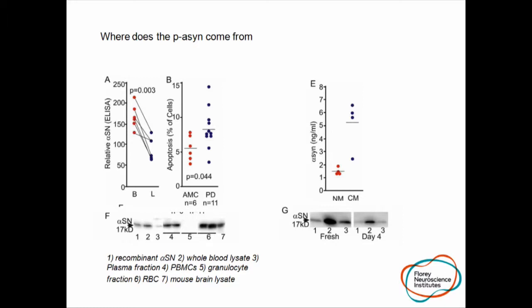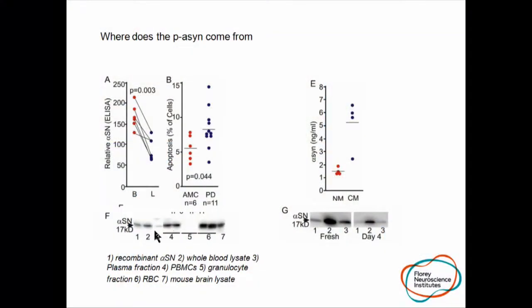The second thing we looked at was to take B cells from a small number of healthy controls and Parkinson's subjects and transform them. At this stage it wasn't because we particularly thought lymphocytes would be the guilty party, but we knew the technology, and we looked at the rate of apoptosis and found it was higher in B cells removed from Parkinsonian subjects. Alpha-synuclein is mainly in the PBMC fraction, not in the granulocytes, but also in the red blood cells.